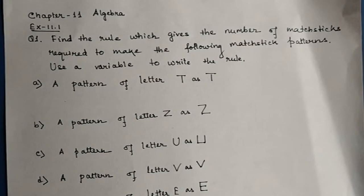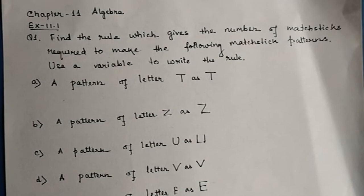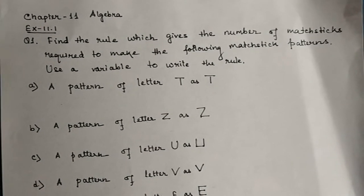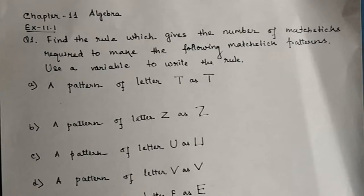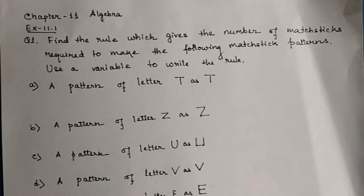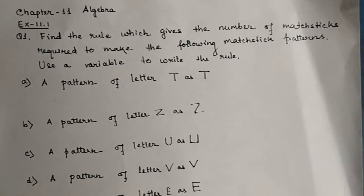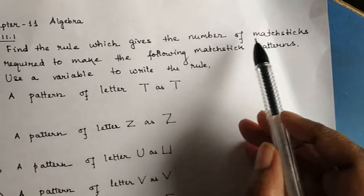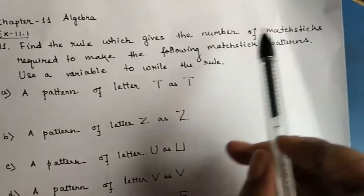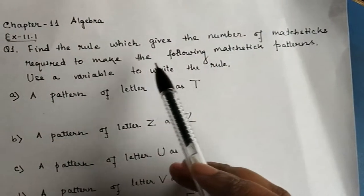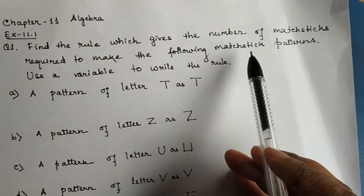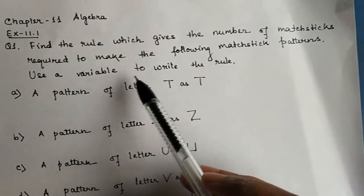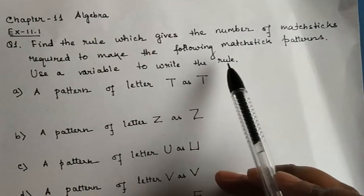Hello students, today we are starting with question number 1 of exercise 11.1. In this question we have to find the rule which gives the number of mastics required to make the following mastic patterns. Use a variable to write the rule.